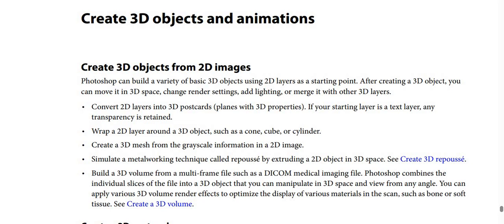You can convert 2D layers into postcards and planes with 3D properties. If your starting layer is a text layer, any transparency is retained. You can also wrap a 2D layer around a 3D object such as a cone, cube, or cylinder, and create a 3D mesh from the grayscale information in a 2D image.